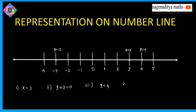The fourth problem is 2x minus 9 is equal to 0. This implies 2x is equal to 9, so x is equal to 9 divided by 2, which is 4.5.